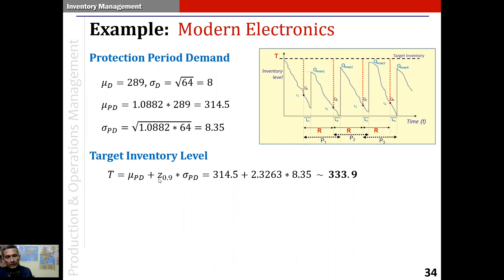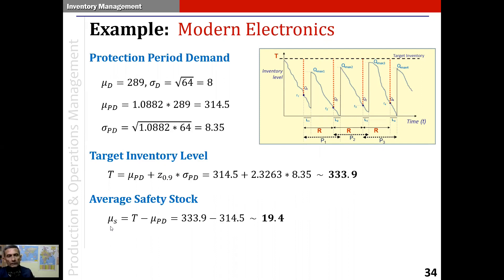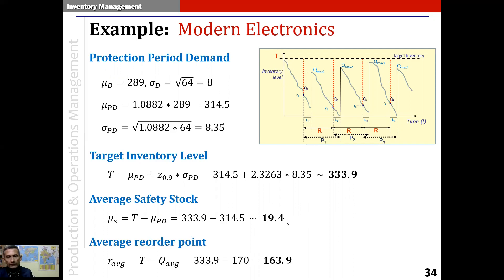The target inventory level T = μ_pd + z(0.99) × σ_pd, which comes to 333.9. That is the target inventory level. The average safety stock μ_s = T − μ_pd = 333.9 − 314.5 = 19 units. So out of the 333.9, about 19 units represents the average safety stock. Finally, the average reorder point is T minus Q-average, which applying these numbers gives 333.9 − 170 = 163.9.